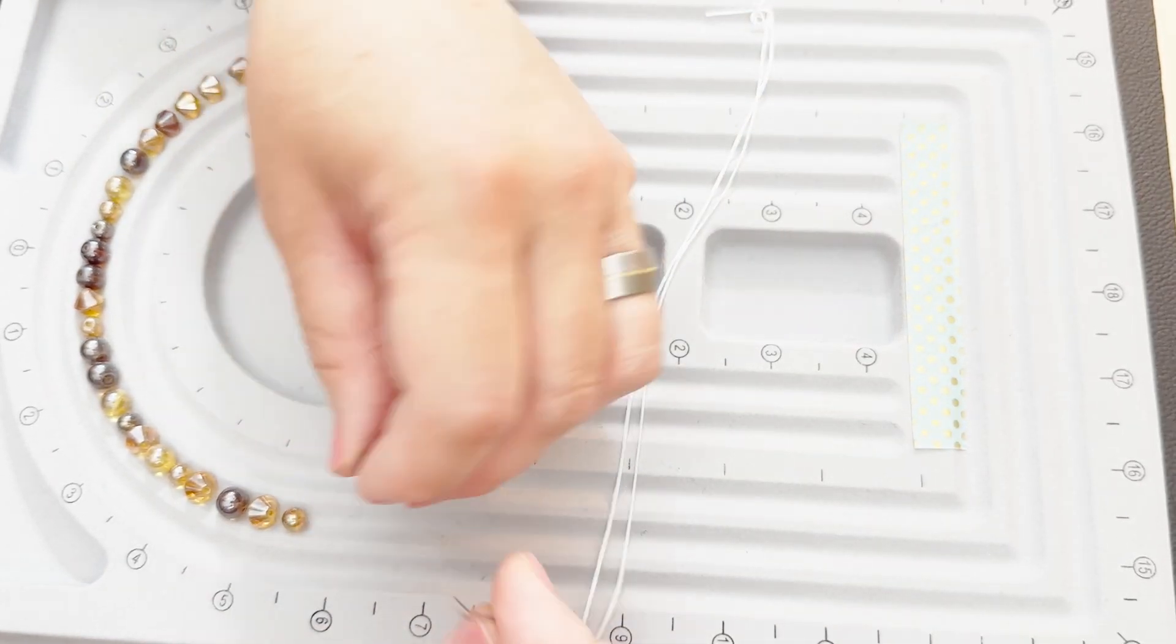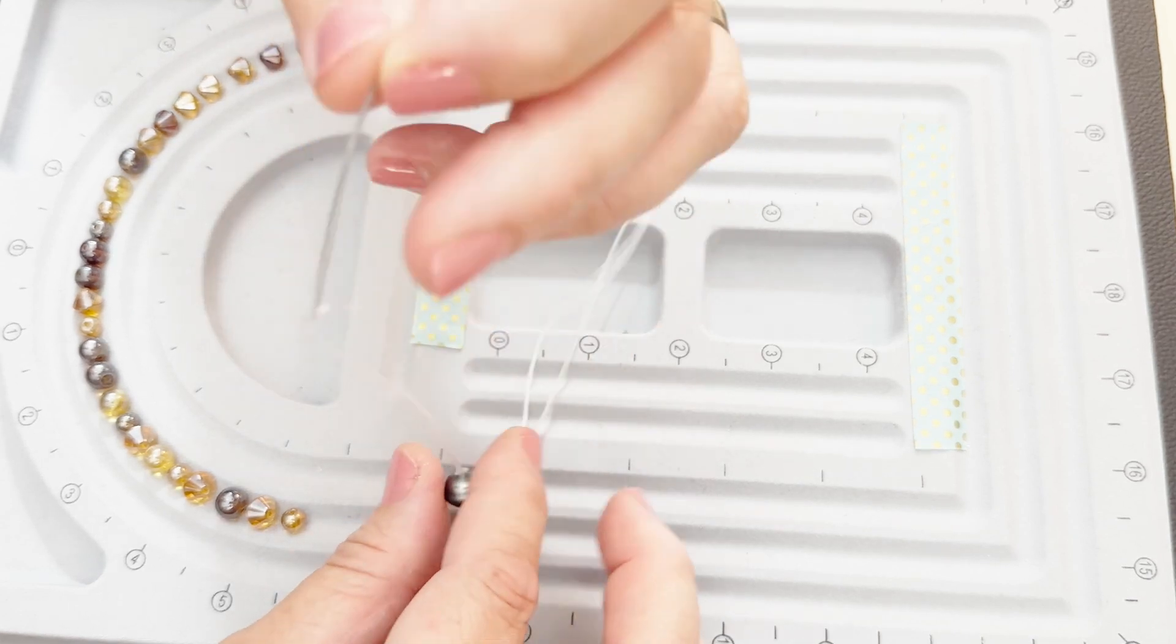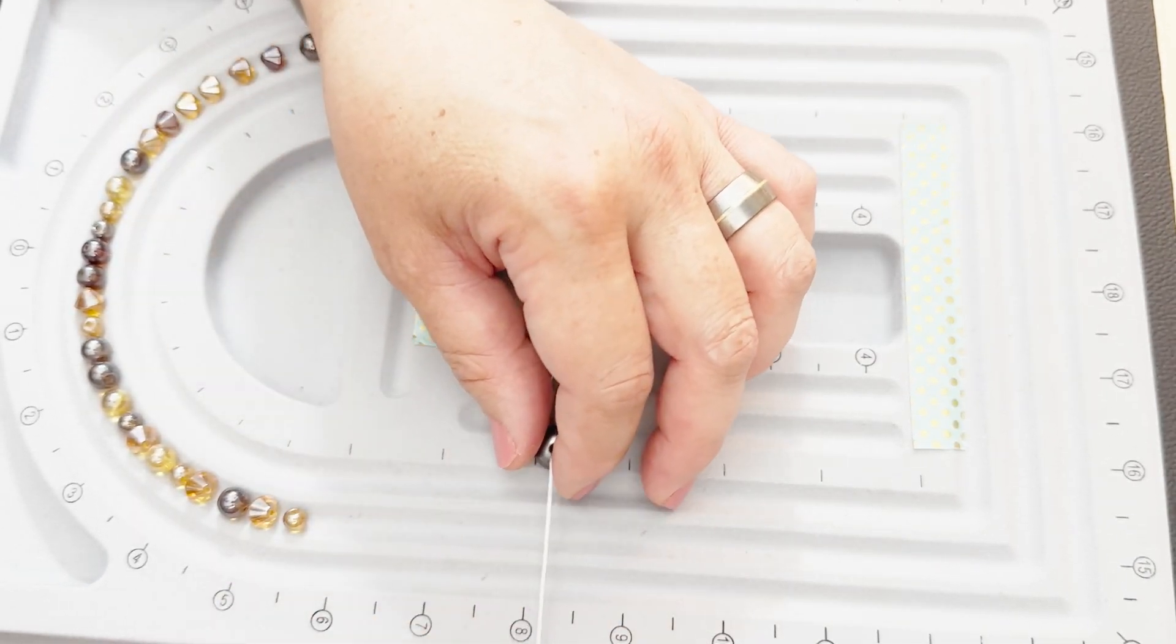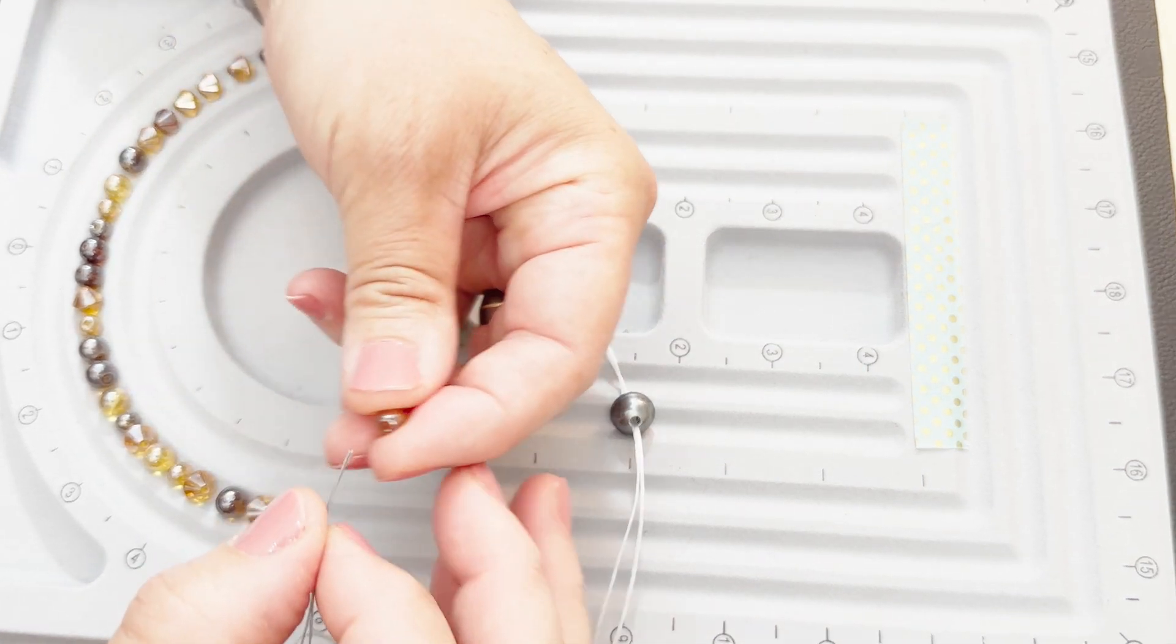Most of these bracelets have a kind of a big bead that's the end, where the knot gets hidden. And so you just thread that one on first, lay them out how you want them. If you want to change the order, now's the time to do it.